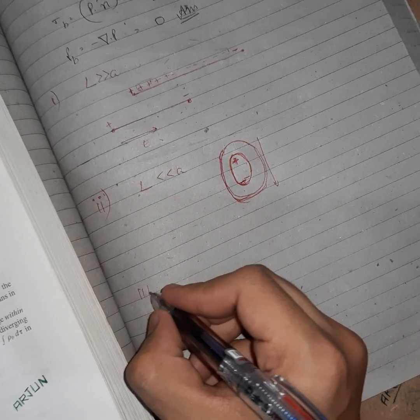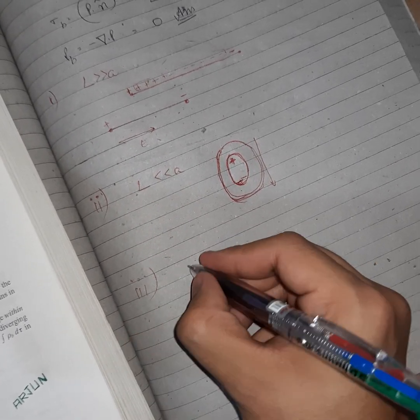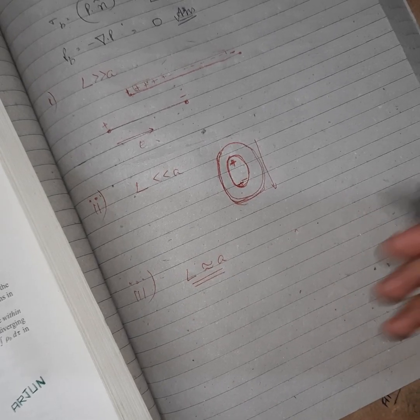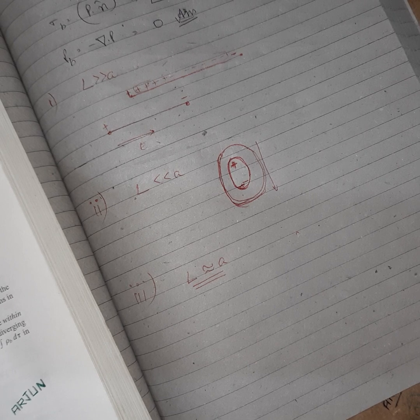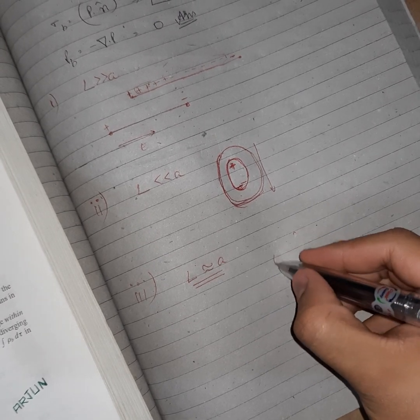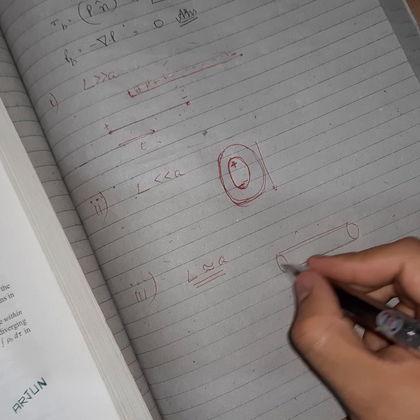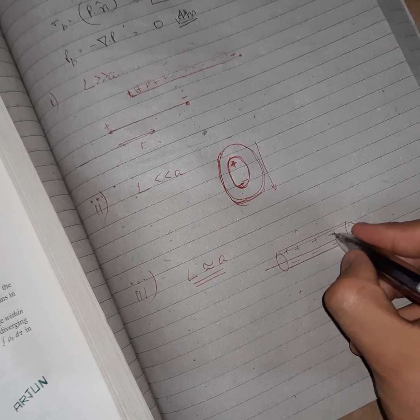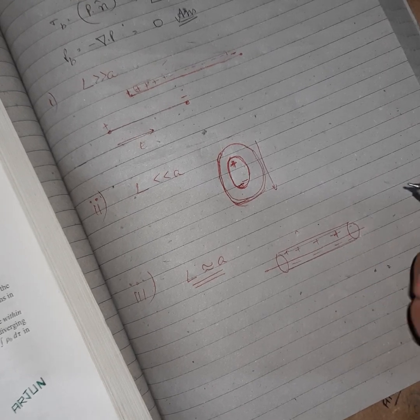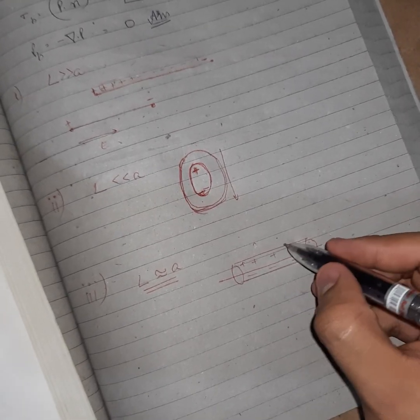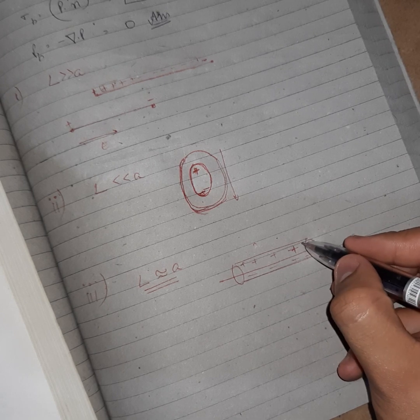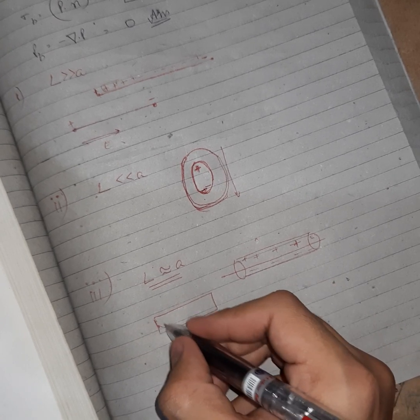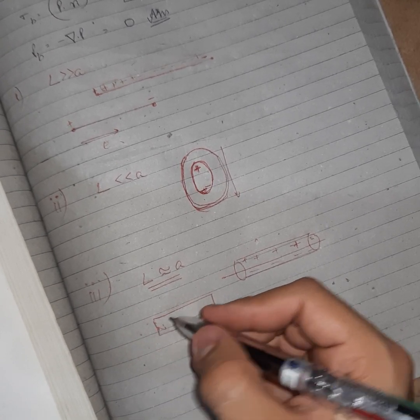So now let us talk about the third part, which is if l is approximately equal to a. So then it will be like a magnet and it will behave like a magnet, north pole and south pole. Polarization plus plus plus plus, minus minus minus. And yeah, in a bar magnet you very well know that from positive signs they attract and negative signs they repel.